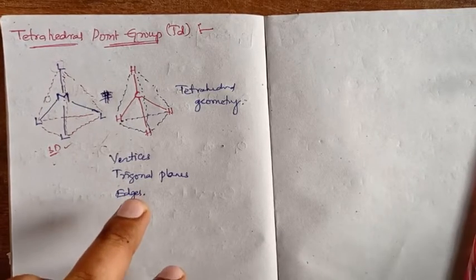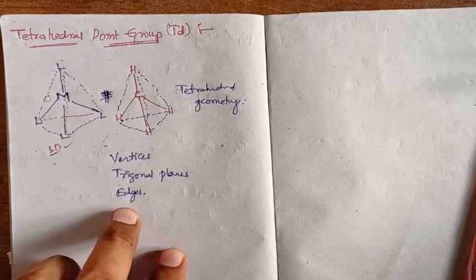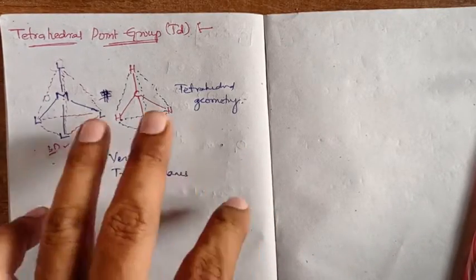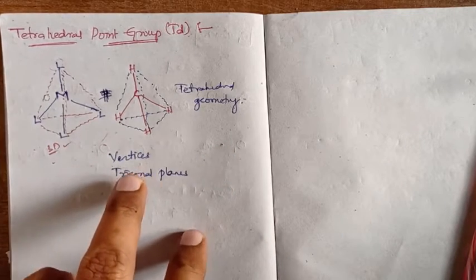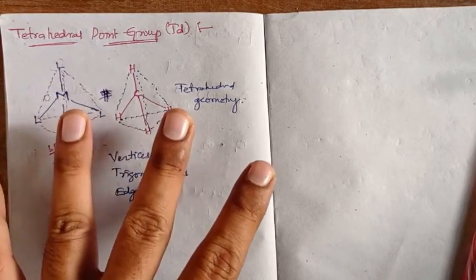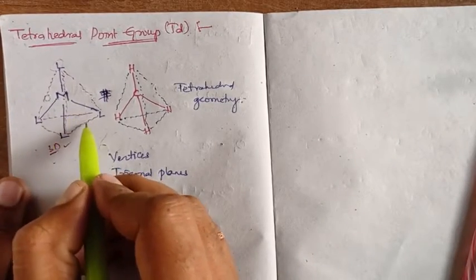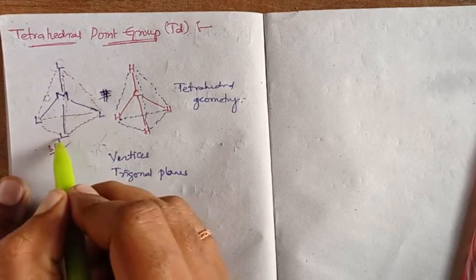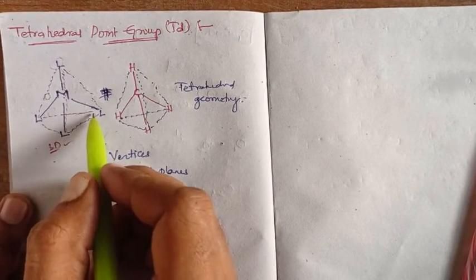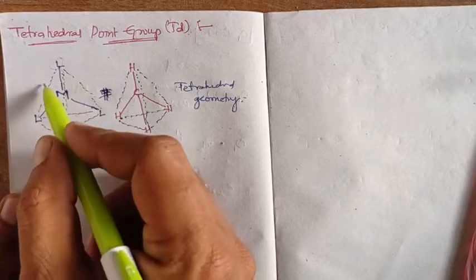We ask: how many pairs of opposite vertices does the geometry have, how many pairs of opposite trigonal planes does it have, and how many pairs of opposite edges does it have? With respect to these we will identify the symmetry elements. Let us clarify what vertices are. Trigonal planes exist in these structures — tetrahedral, octahedral, and icosahedral structures all have trigonal planes.